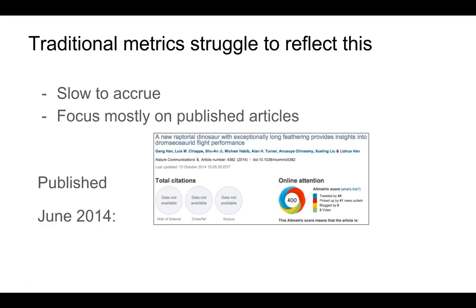In terms of why altmetrics came about: with traditional metrics and citations, we found they were very slow to accrue. We can see a paper about a dinosaur here that has no citations on Web of Science, Crossref, or Scopus. But it's been picked up by 41 news outlets, tweeted by 44 people, blogged by six people, and there are two videos. So that is some very good and quick feedback that we can then drill into.